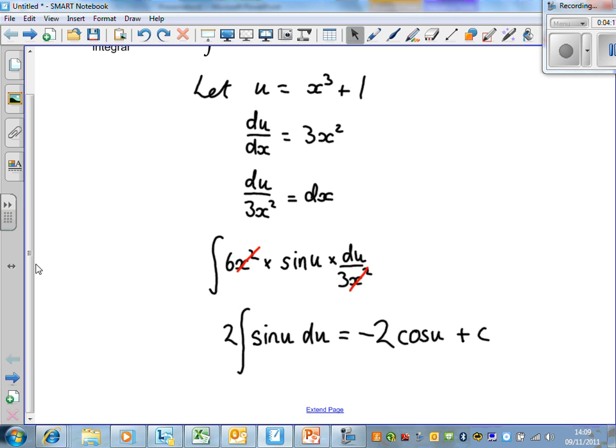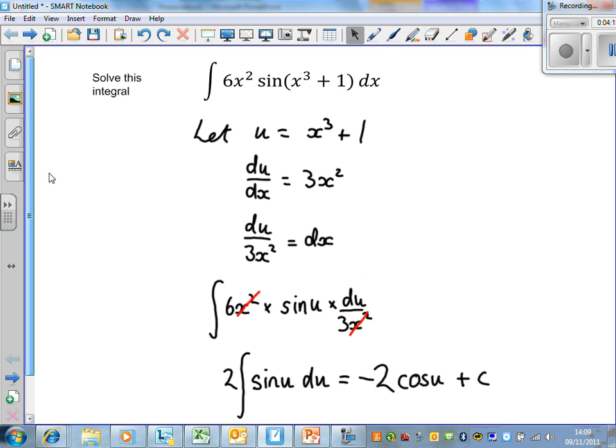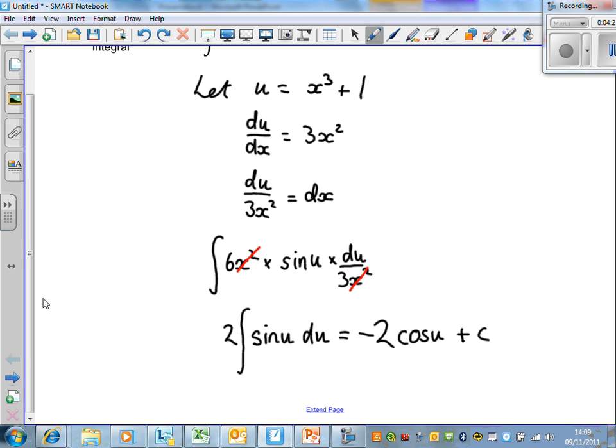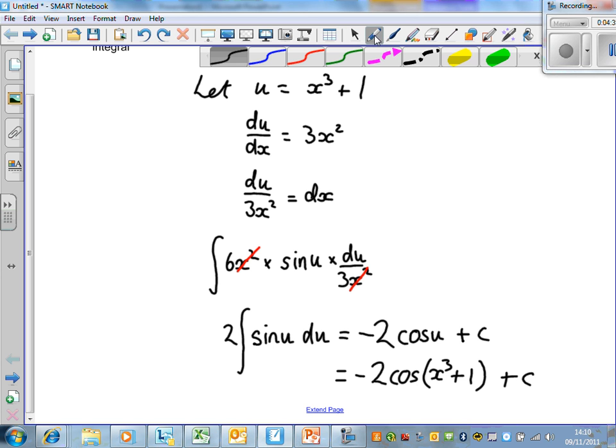Desubstitution, because the question was in x, we need the answer in x, so we need to resubstitute for u. So the final step is just to put minus 2 lots of cos. Now this is x³+1 plus c. So there we have it. Those are the answers for that one.